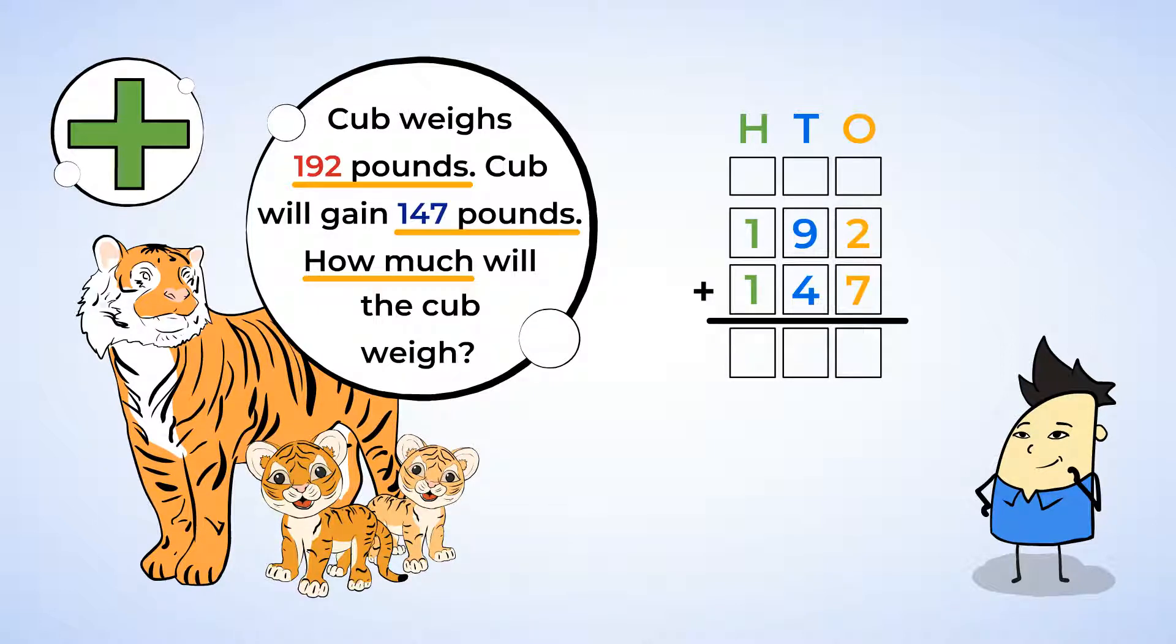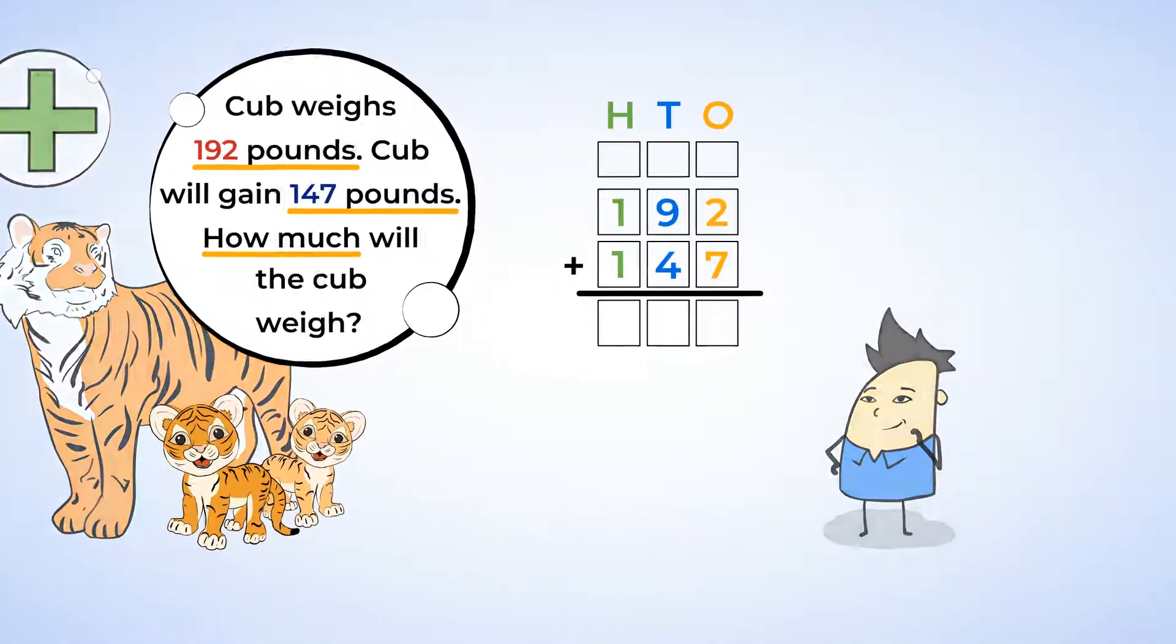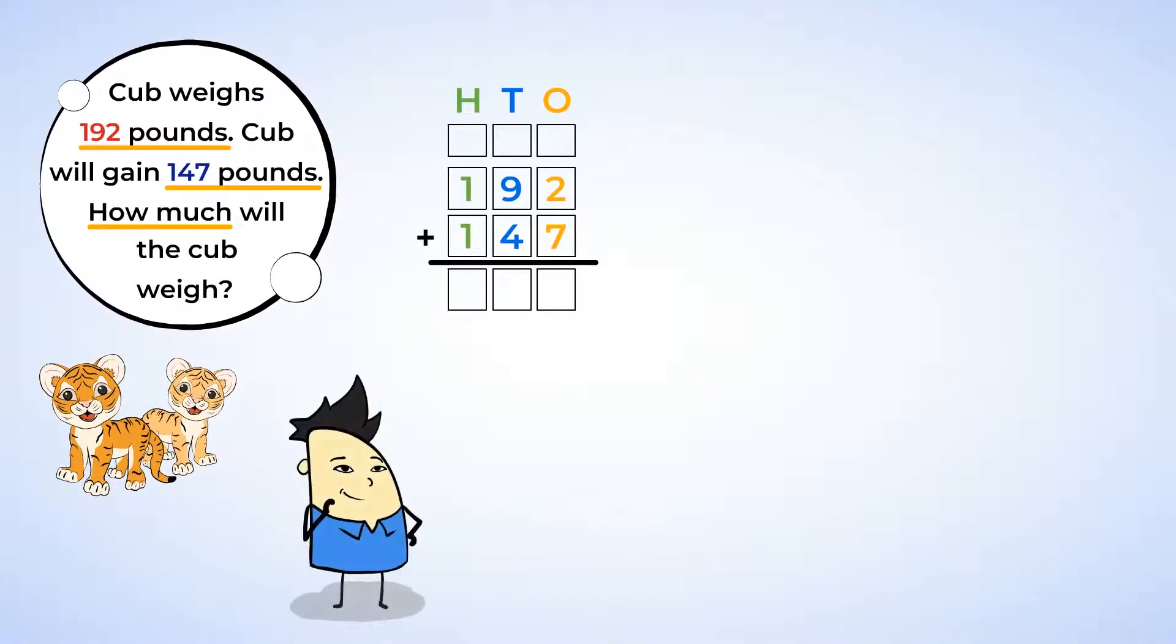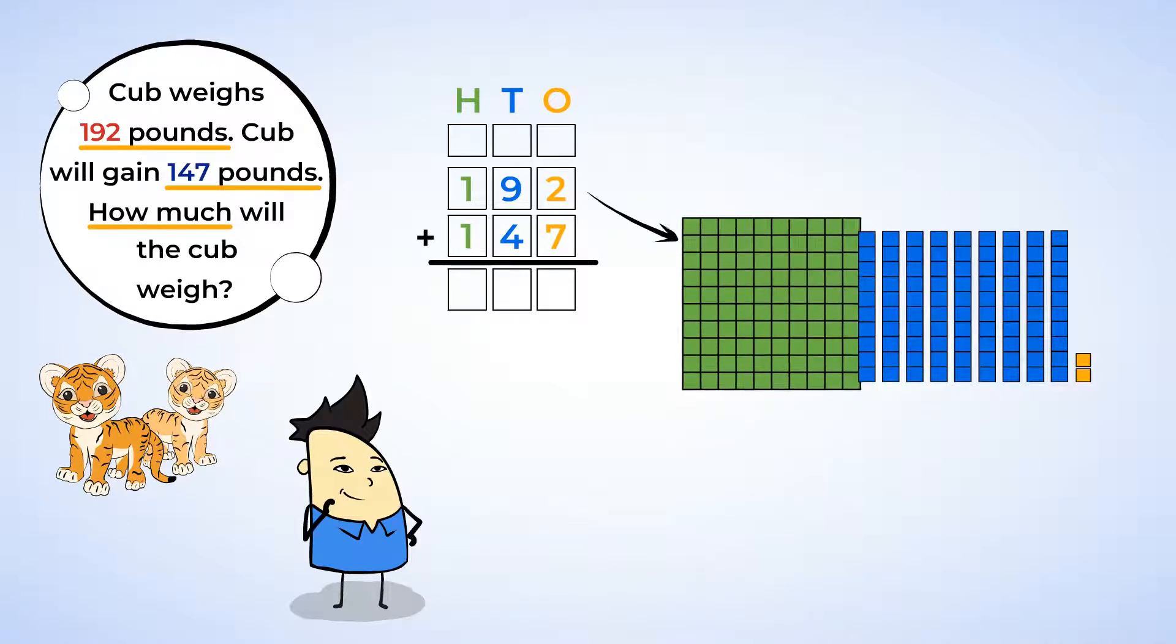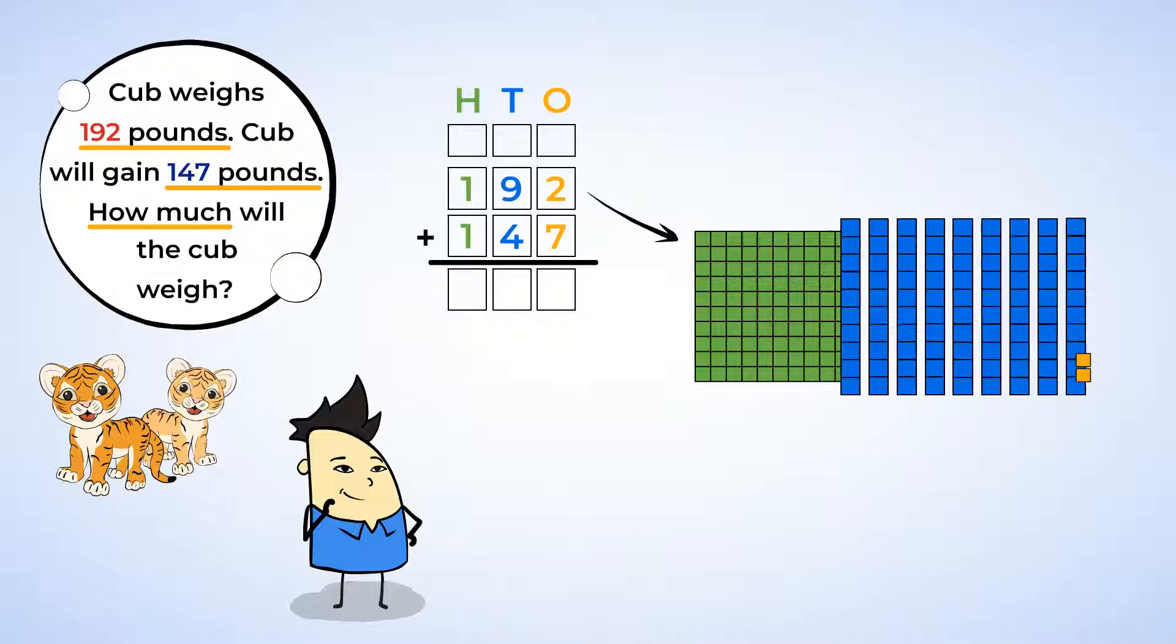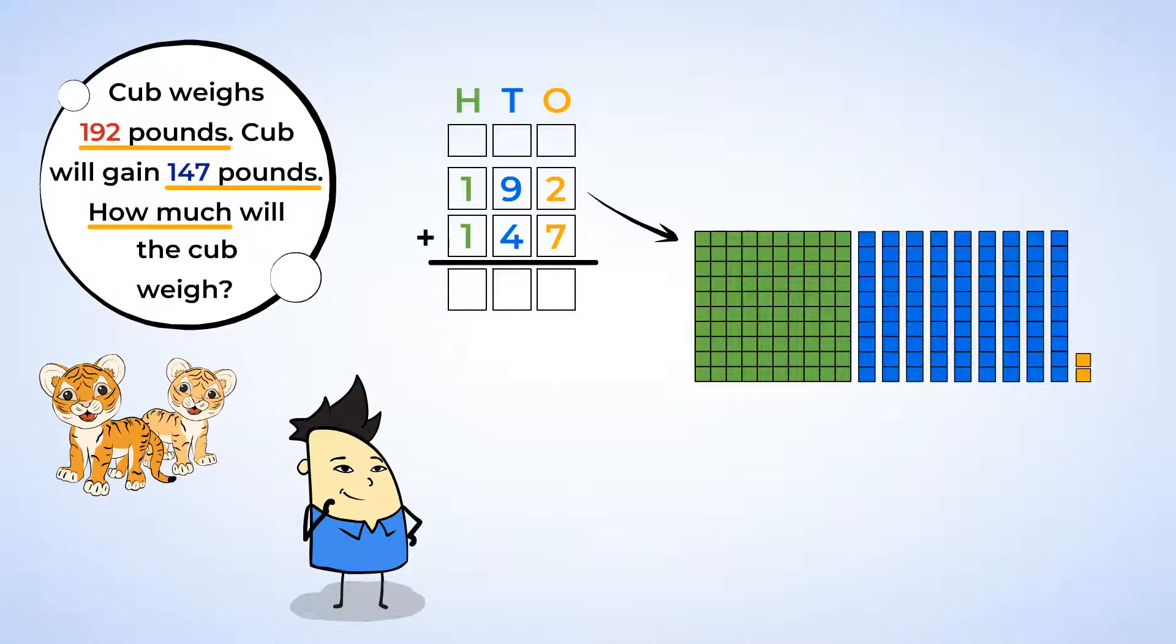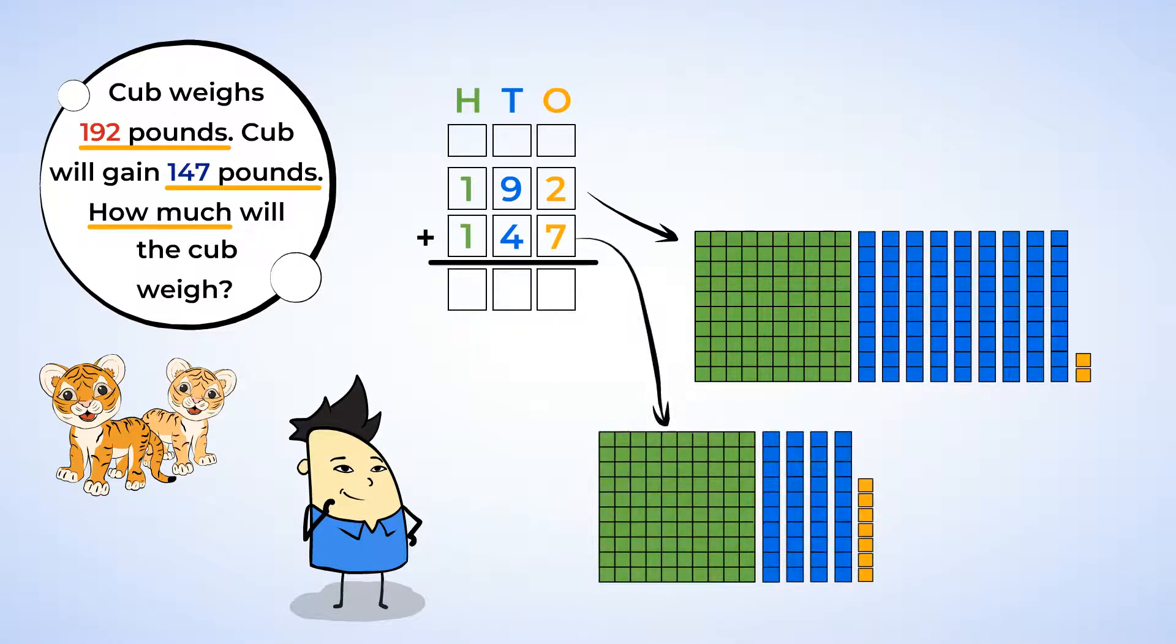Let's also use our base ten blocks here. It can help you see what is happening when we add. Here is 192 in base ten blocks. One hundred plate, nine ten sticks, and two unit cubes. Here is 147 in base ten blocks. One hundred plate, four ten sticks, and seven unit cubes.